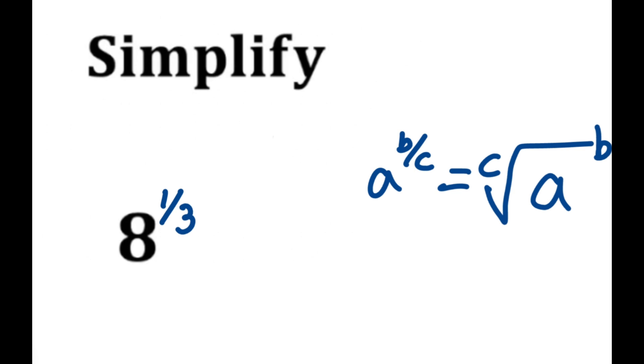And b is going to be one. So we're going to have in the place of the c we have three, in the place of the a we have eight, and then b is one. Now anything to the power of one is just itself, so we can actually get rid of that one, and this is a solution.